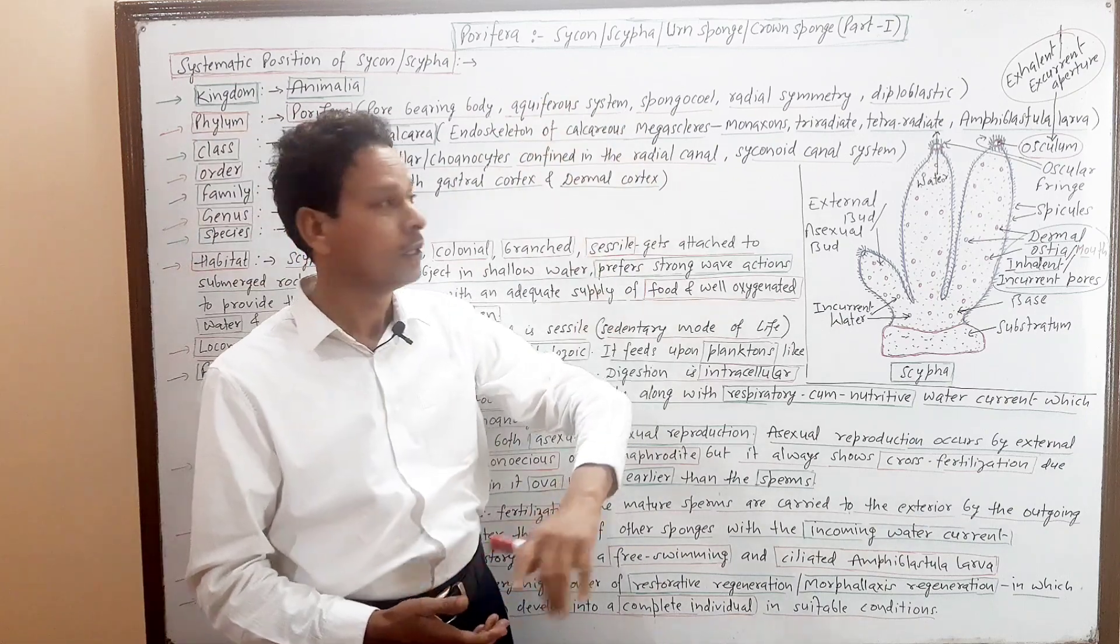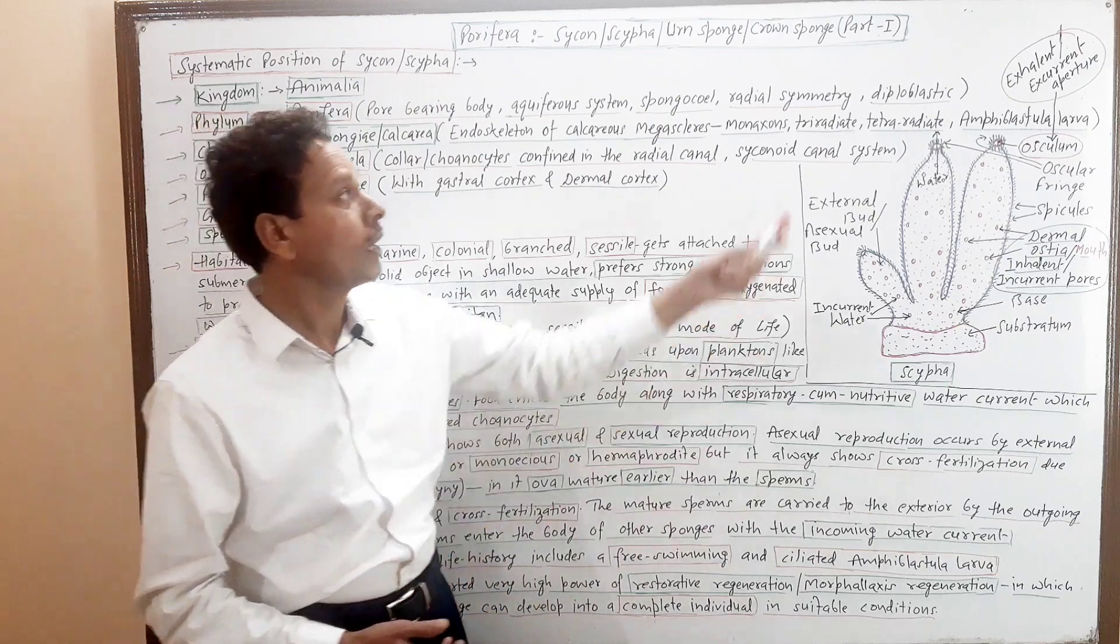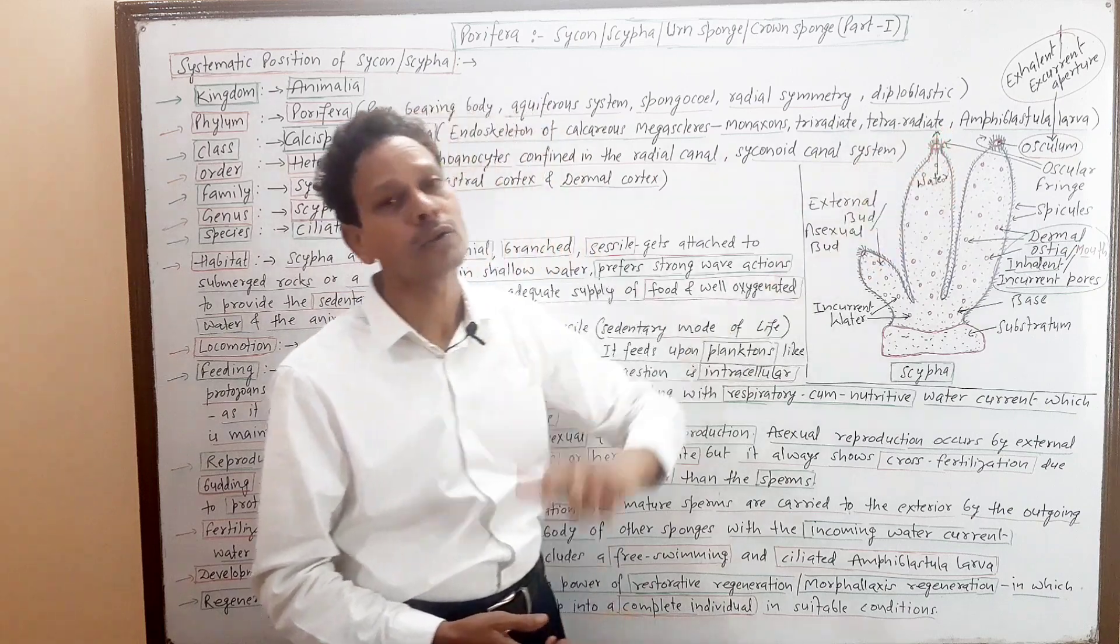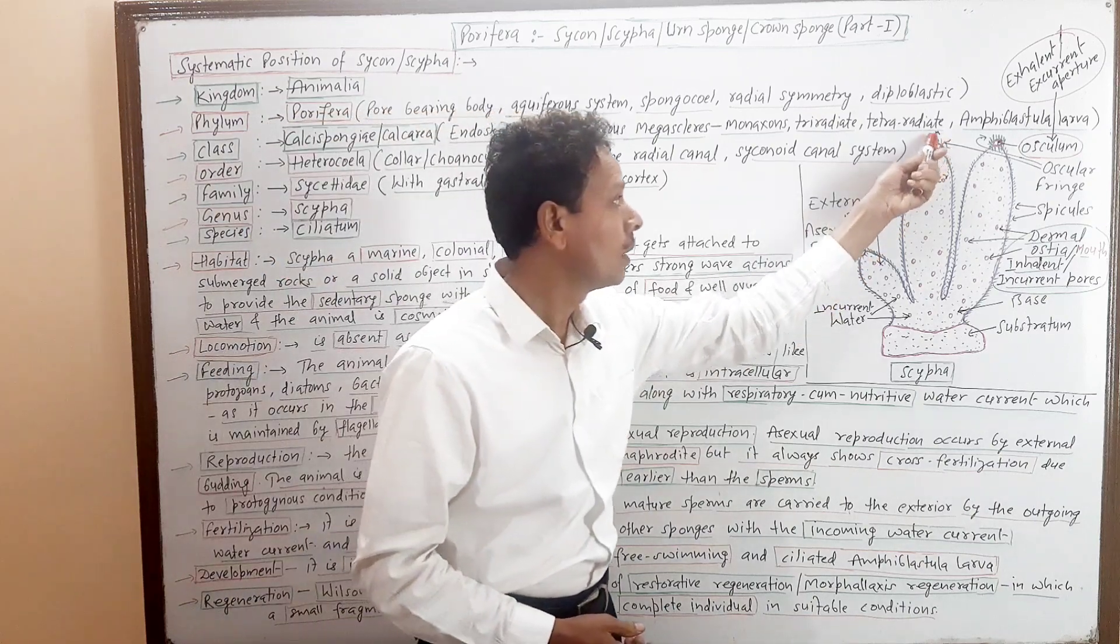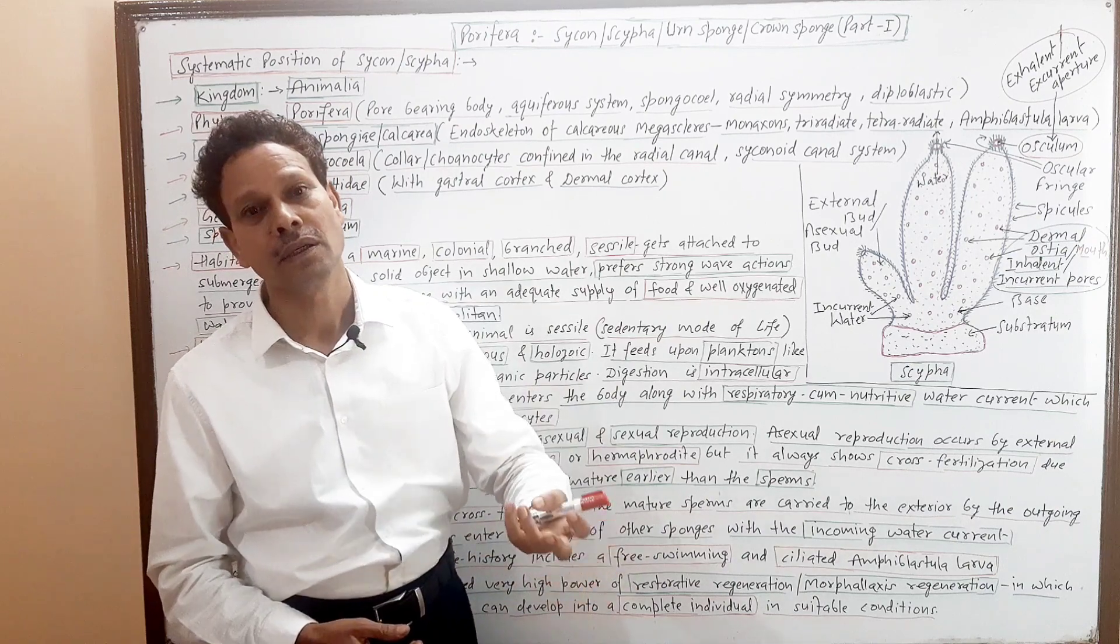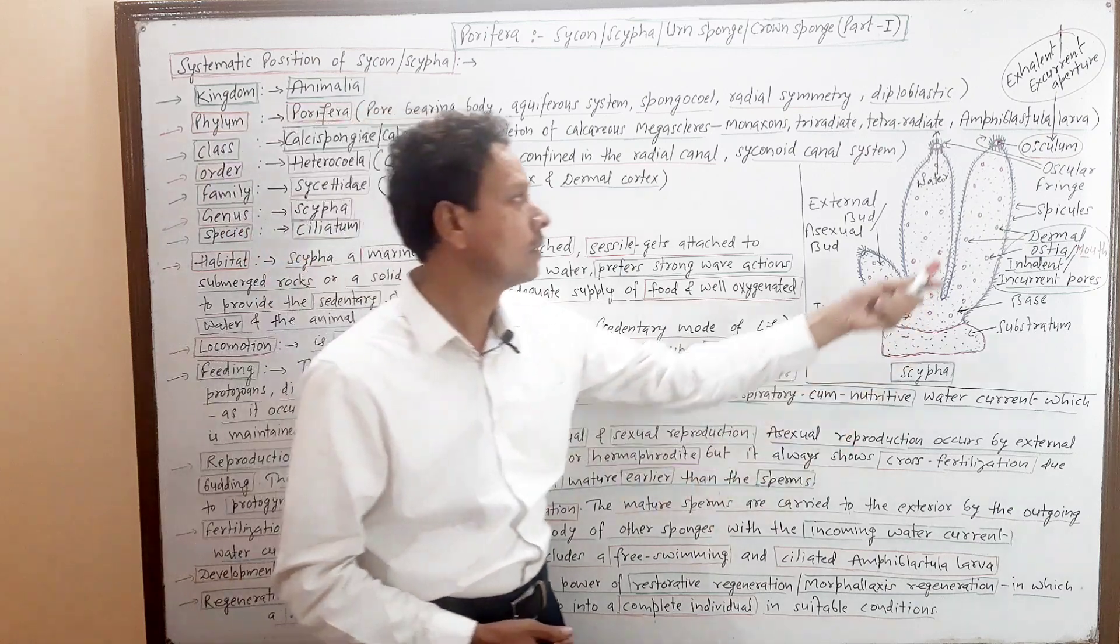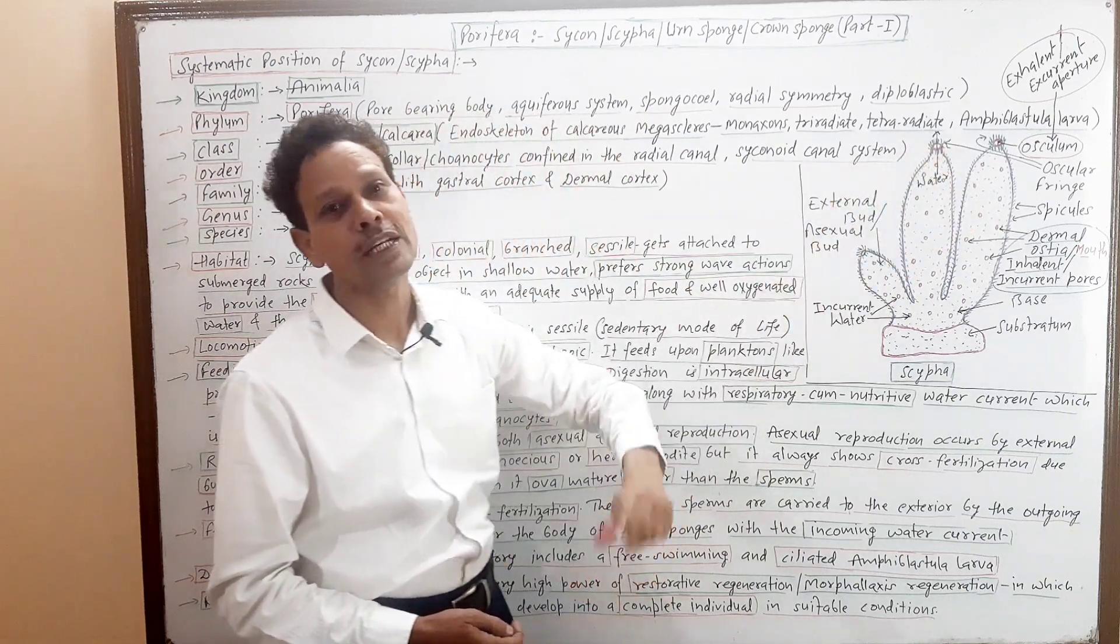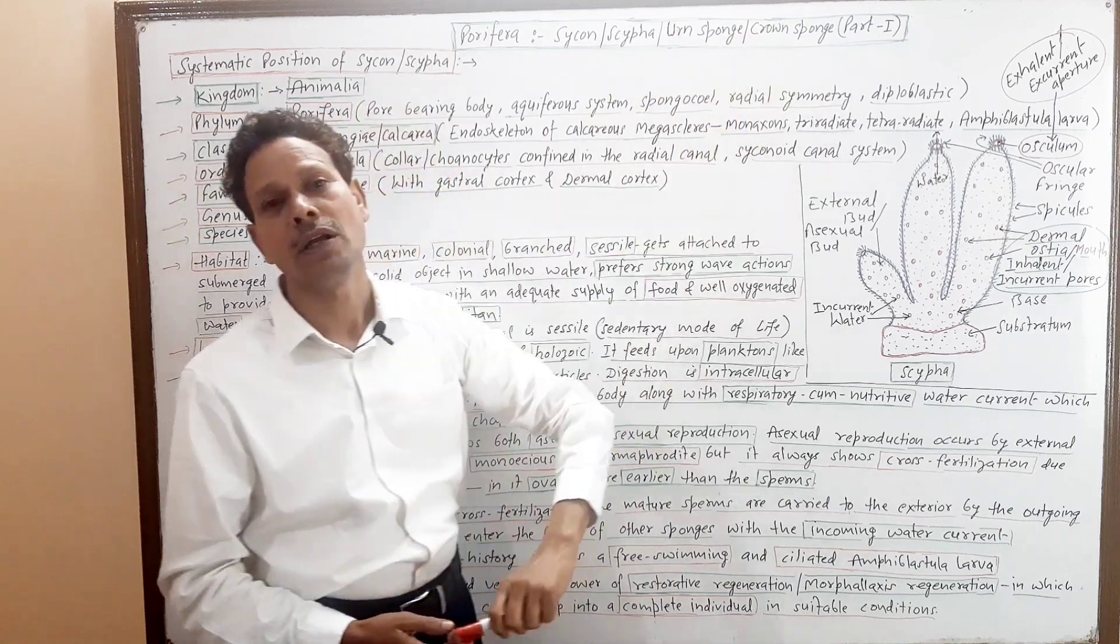We call it urn sponge because of its body shape that is vase-like. We call it crown sponge because look at this osculum, and that osculum having a ring-like structure, having a crown, and this crown is produced by the spicules. The elongated, large-sized megascleres produce a fringe ring over this osculum. That's why the Sycon Scypha is crown sponge.